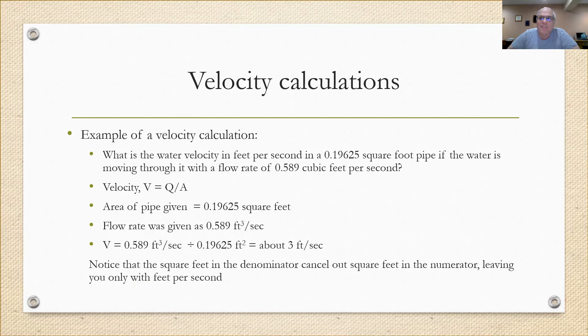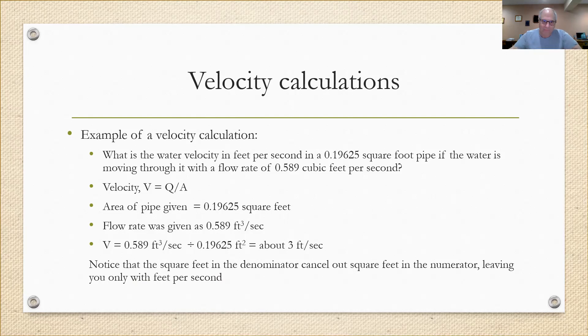Notice that the square feet in the denominator cancels out the square feet in the numerator, leaving you only with feet per second. That's why you've got to get the cubic feet on top and the square feet on the bottom so you divide properly.